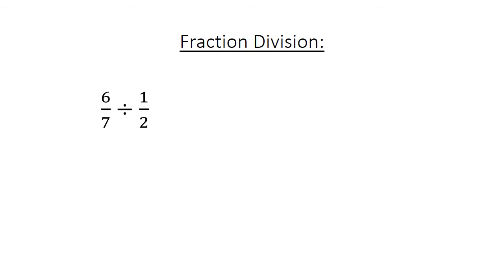Fraction division. 6 over 7 divided by 1 over 2 equals 6 over 7 times 2 over 1 equals 12 over 7.